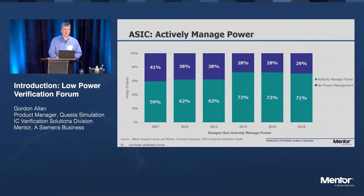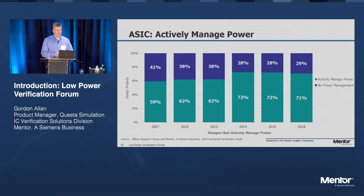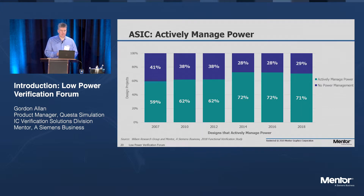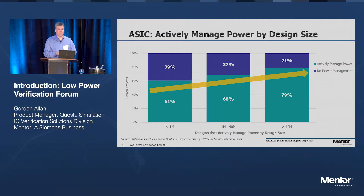At Mentor, we commission a survey every two years through Wilson Research. In the area of low power, one result shows the percentage of designs that are actively managing power. If you're here in the room, you're already in the 71–72% of ASIC designs that are power-sensitive and have to consider power. Over the years this number is growing, with the largest designs approaching 80% that have to actively manage power. Power is becoming a normal requirement of the chip design flow.